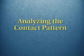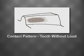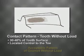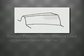This brings us to the issue of analyzing the contact pattern. Let's first look at an ideal contact pattern from a tooth without load. The length and position are important. Here we see that the contact is covering approximately 30 to 40 percent of the tooth surface and is located central to the toe. This would be an acceptable pattern of a gear set without load.